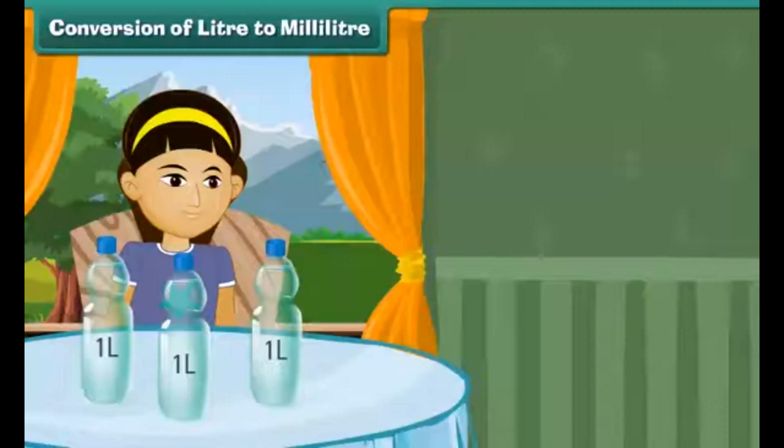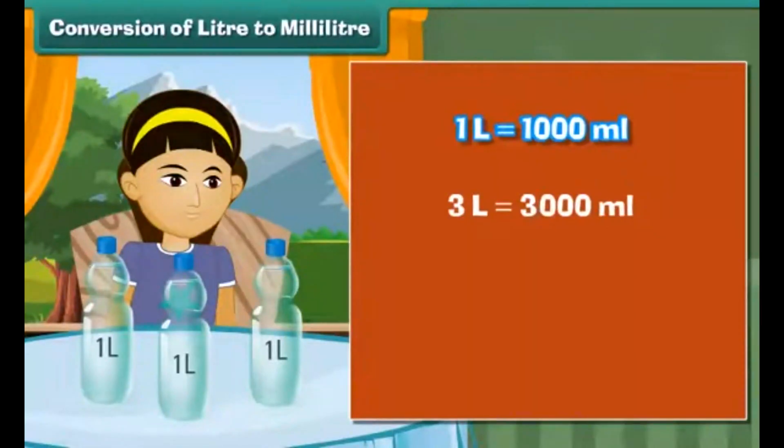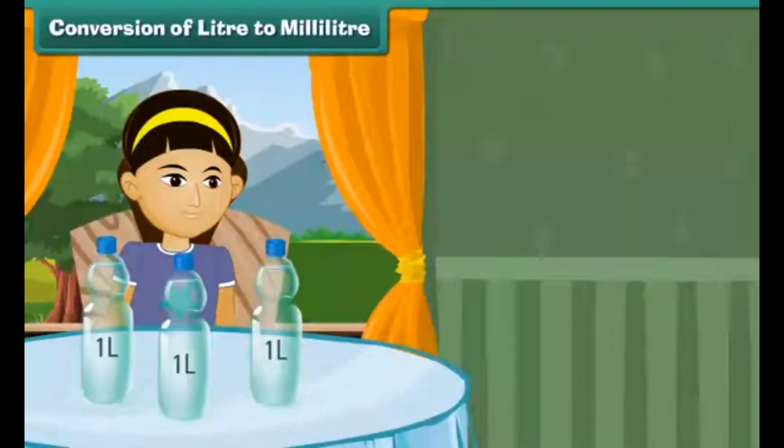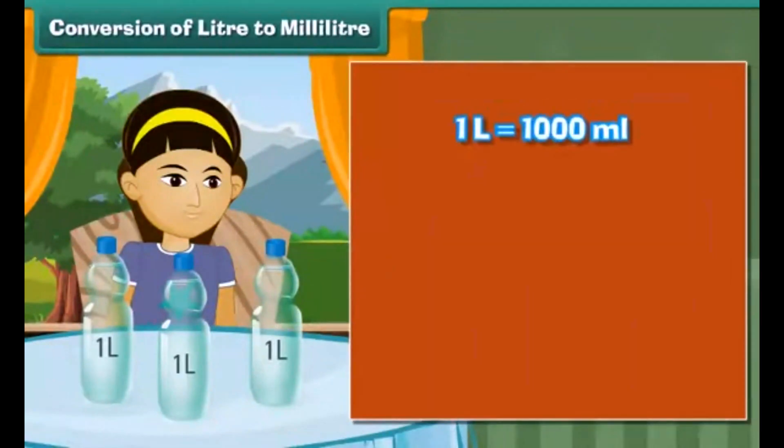Here, Rita is consuming 3 litres of water. If she is consuming 3 litres, how many millilitres? You know the unit of capacity: 1 litre is 1000 milliliter. So, if larger to smaller, you multiply by 1000. So, 3 litres is 3 into 1000, it becomes 3000 milliliter. So, 3 litres of water means she is consuming 3000 millilitres of water.